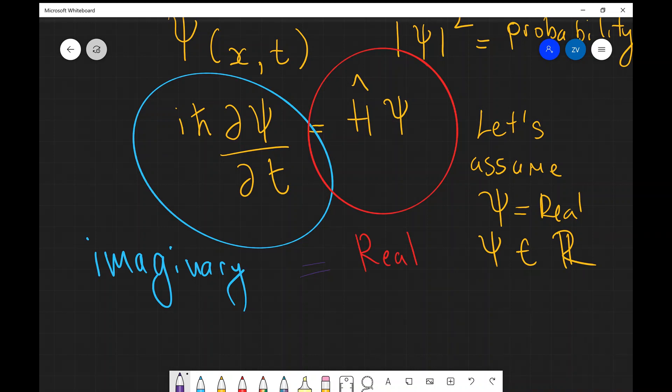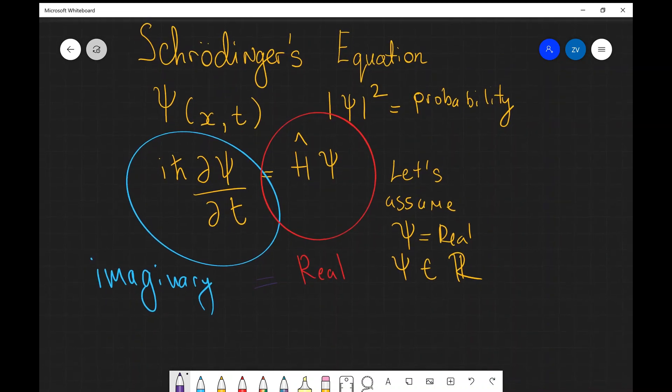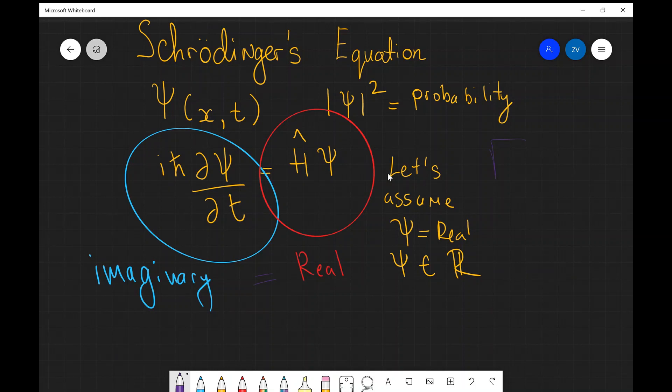So we know that the wave function, this mathematical quantity which tells us the probability of finding a particular particle at a given time at a given position, has got to be imaginary. So this imaginary number, the square root of minus one is equal to i, even though it was assumed to be a complete mathematical curiosity in the 16th and 17th century and later on, actually seems to be a fundamental part of nature. This is a really interesting philosophical question and I'm curious to hear your thoughts about this.